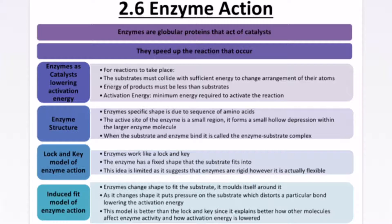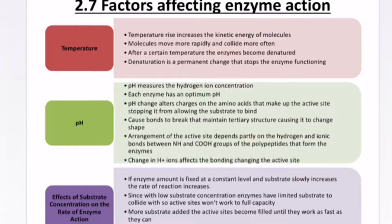Factors that affect the rate of reaction. First: temperature. Enzymes have an optimum temperature at which they work best. In humans, the optimum body temperature is 37°C because that's when enzymes work best. At higher temperatures, molecules move more rapidly and collide more often. However, after a certain temperature — normally around 45°C — enzymes become denatured, which causes a permanent change that stops enzyme function.